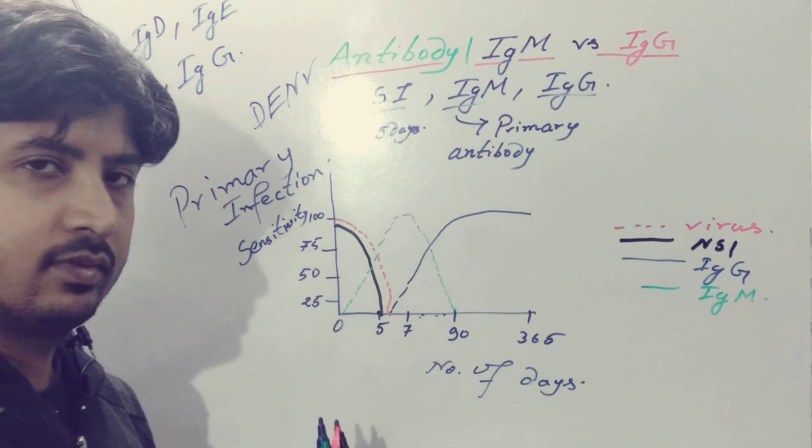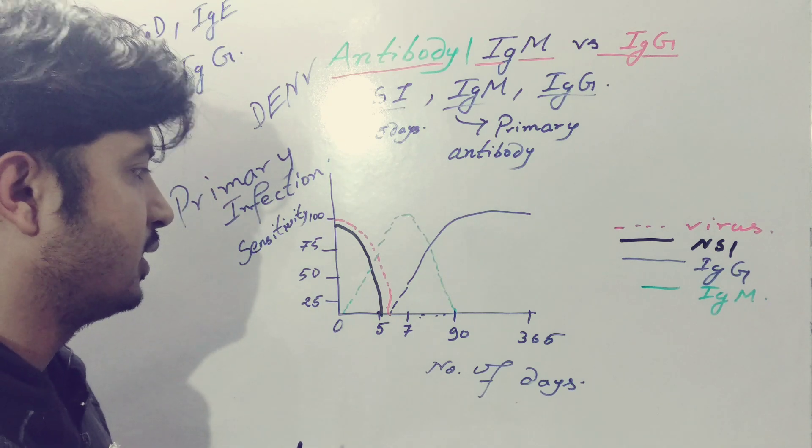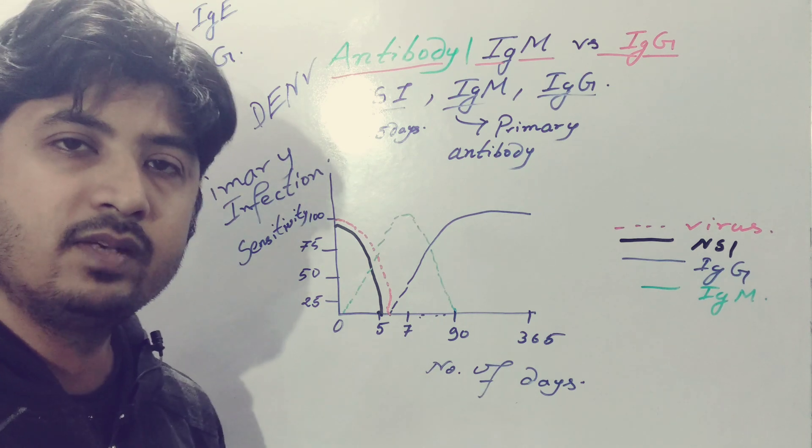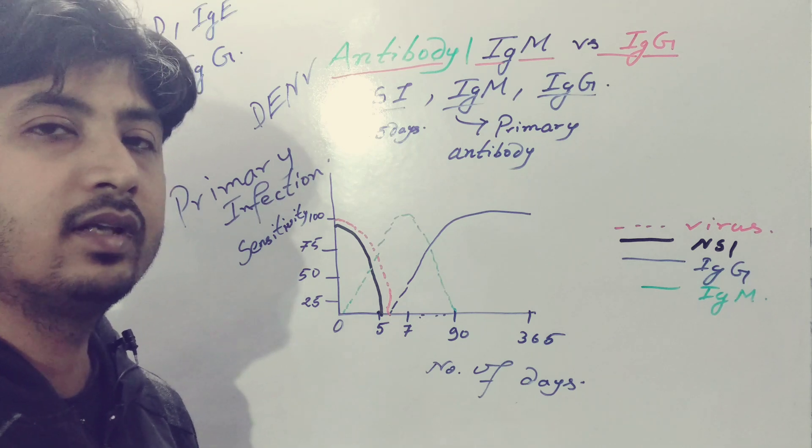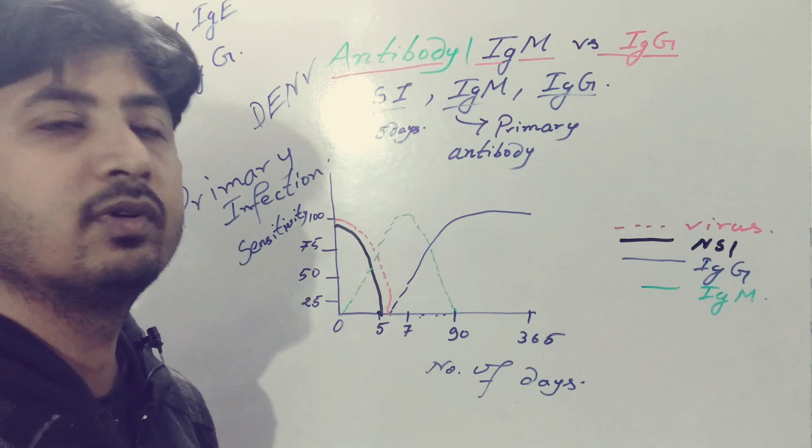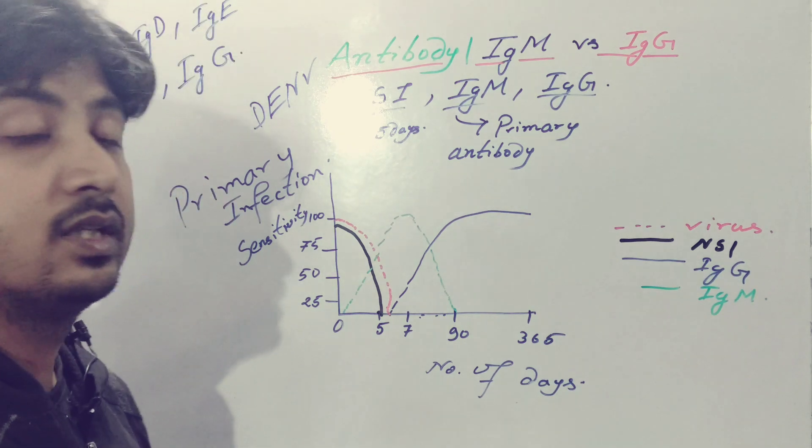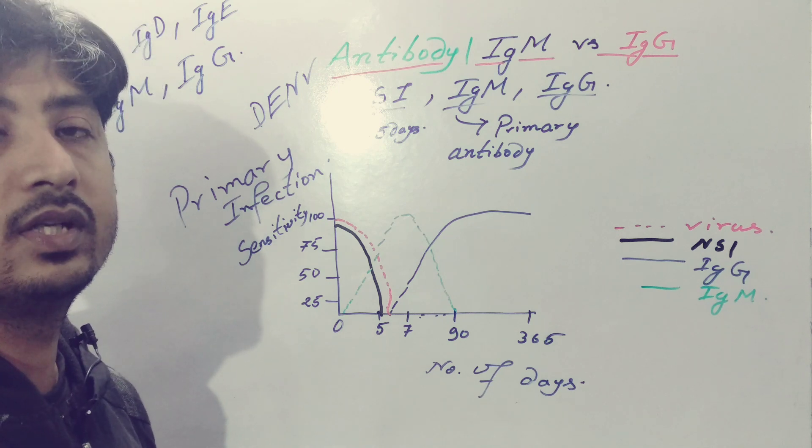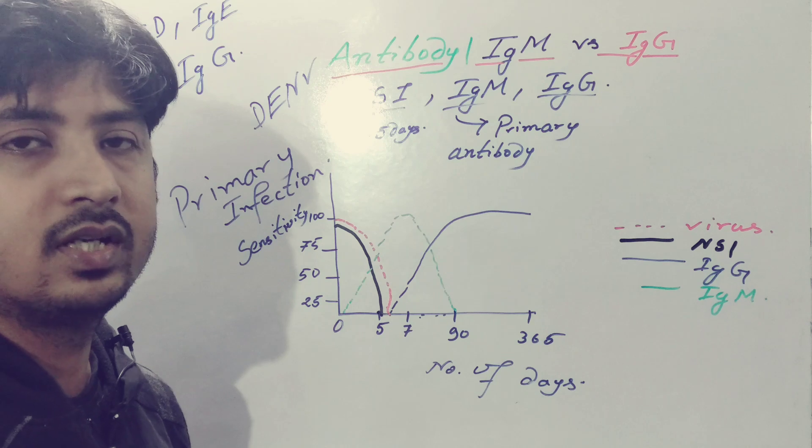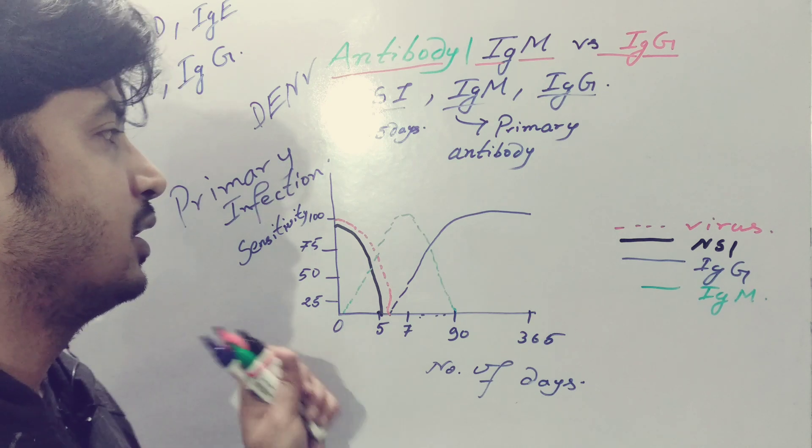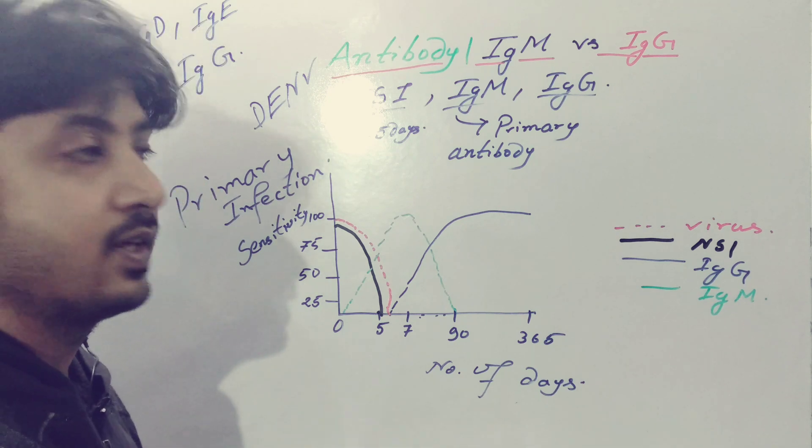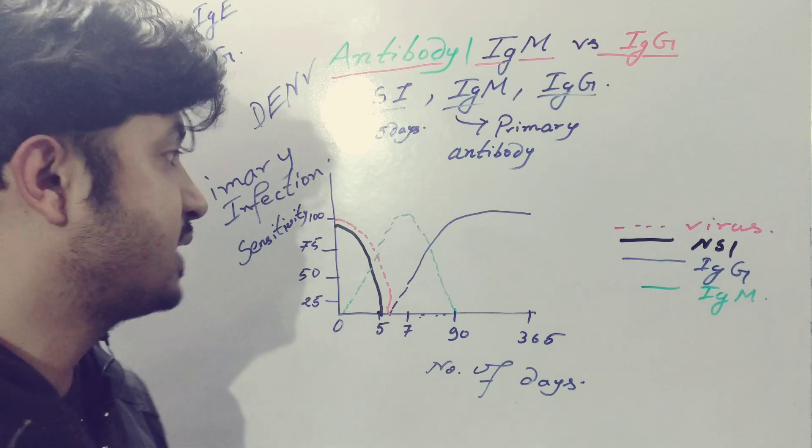In case of primary infection, the response will be IgM faster, and the peak level will be after five days where it rises to the highest level. It can be detected up to 90 days and then disappear from the blood. The IgG response will be higher after a few days—sometimes two weeks, sometimes after seven to ten days from the symptoms—and then it will be detected for several days.